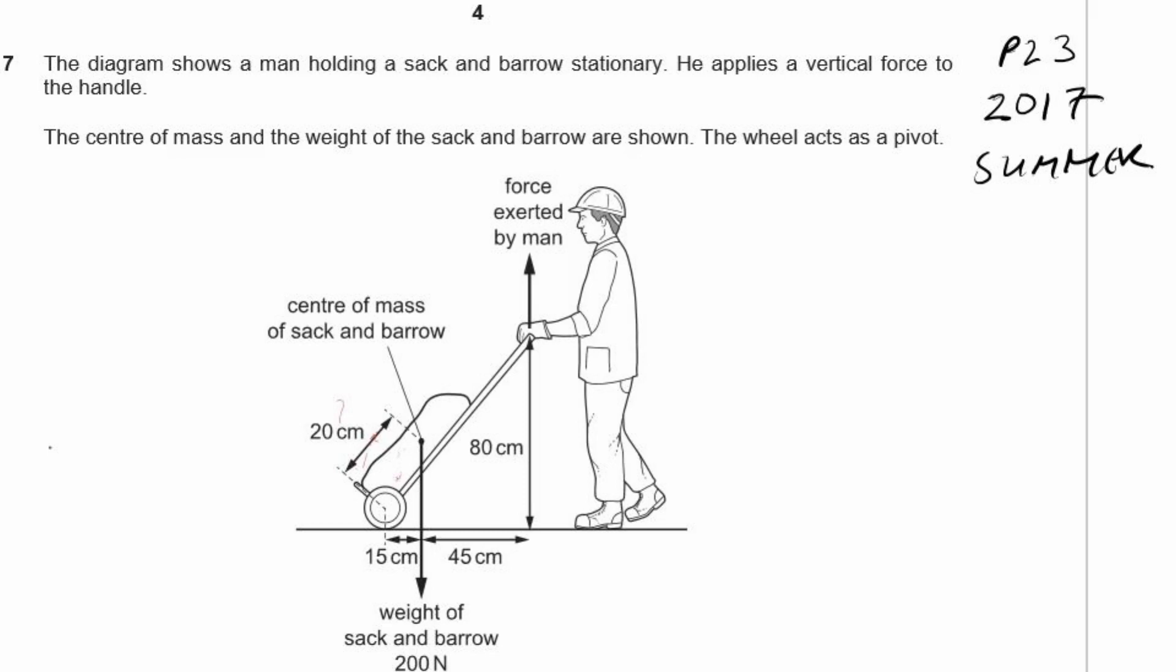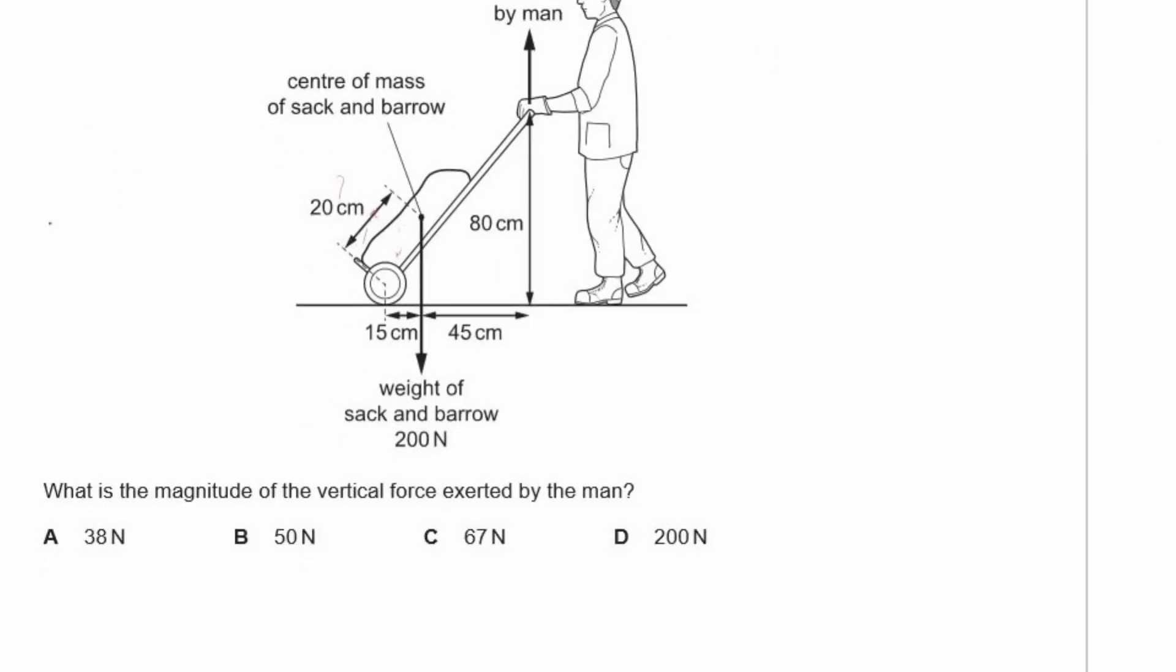Question 7. The diagram shows a man holding a sack and barrel stationary. He applies a vertical force to the handle. The centre of mass and the weight of the sack and barrel are shown. The wheel acts as a pivot. We can see that there. We've got a little barrel there and a man holding it up.